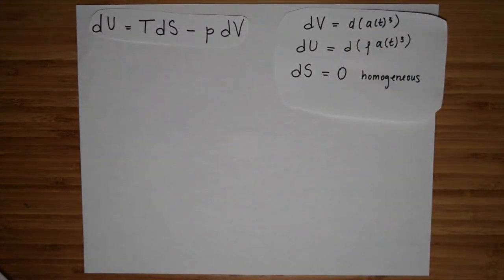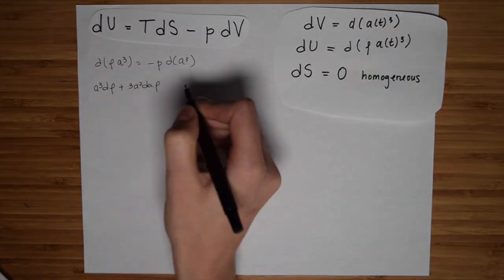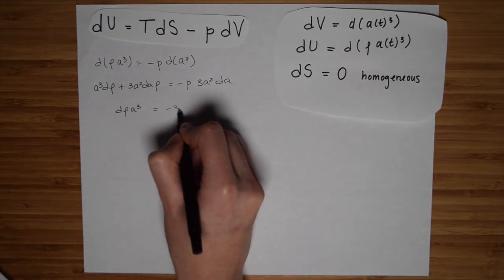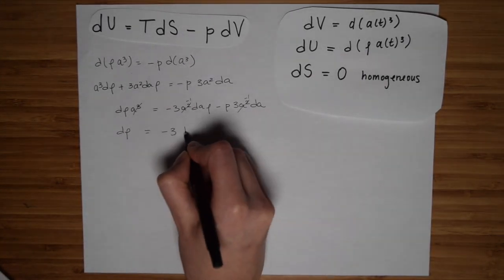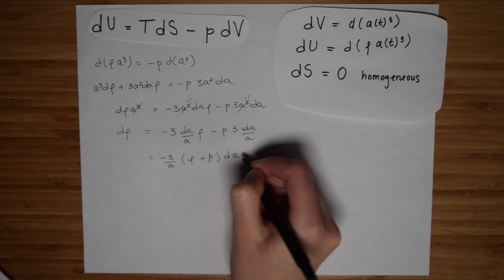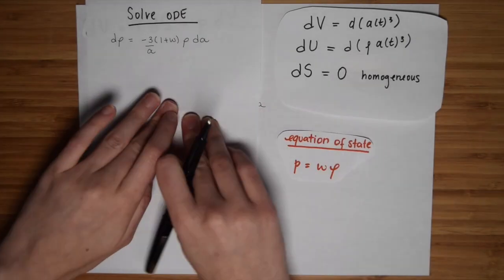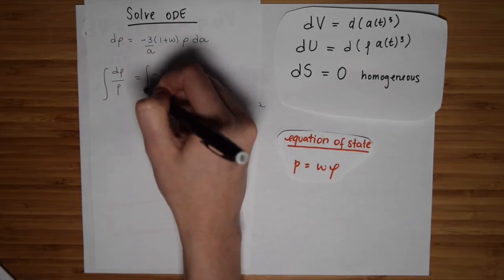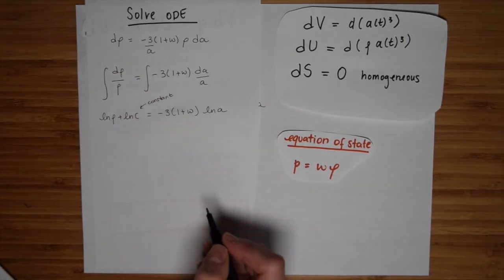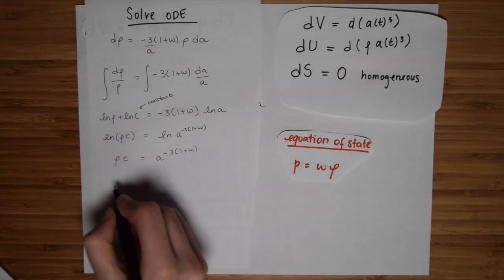Alright, so if we plug all this in, do a little algebra and make use of the equation of state parameter w, which is the ratio of the pressure to the energy density of the fluid, we get this nice ordinary differential equation. If we solve this ODE, we end up with this equation relating the density of some fluid to the scale factor.